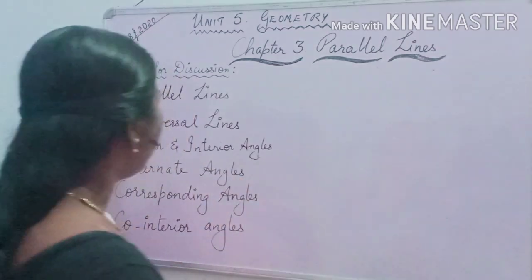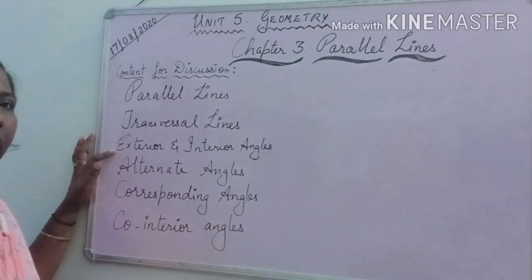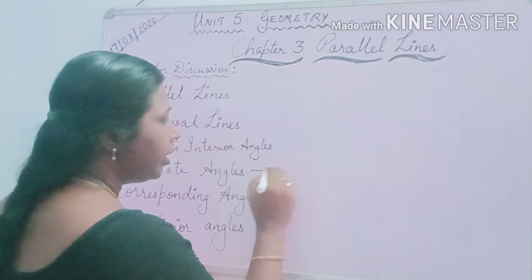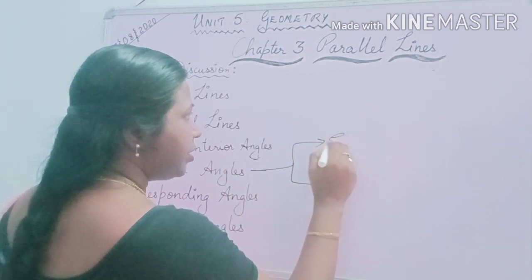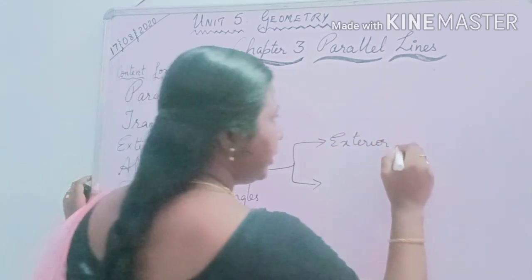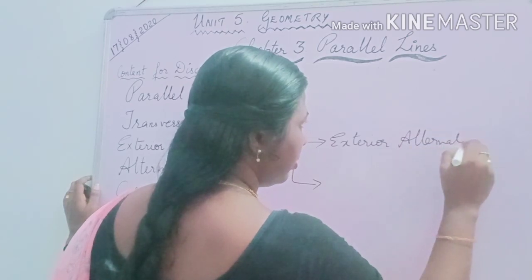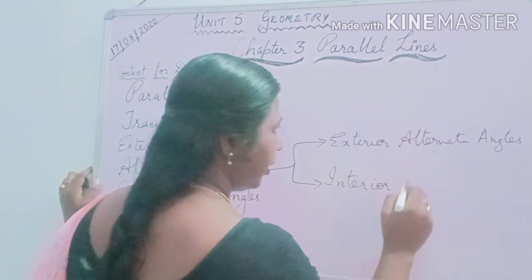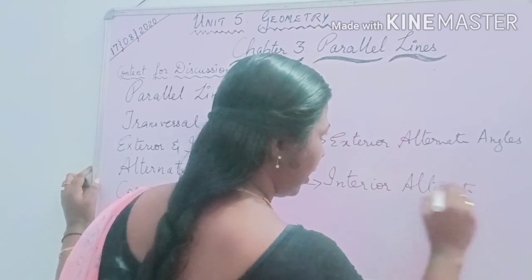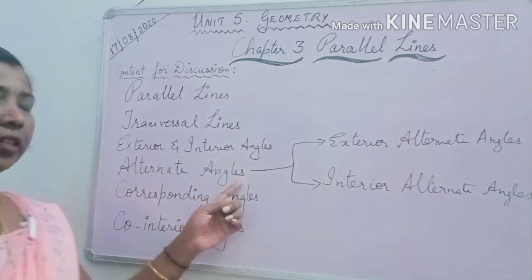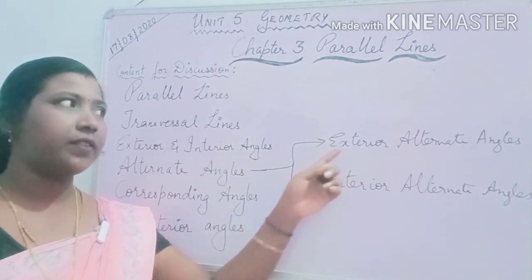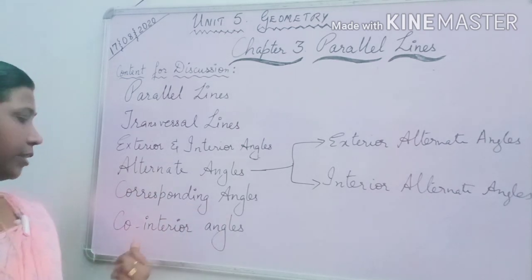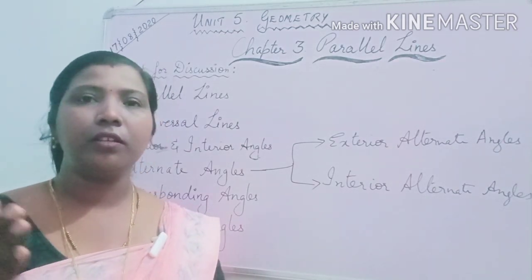In this module we are going to learn about Parallel Lines, Transversal Lines, Exterior and Interior Angles, and Alternate Angles. Inside that we will also learn about exterior alternate angles and interior alternate angles. The next points are corresponding angles and co-interior angles. We will also start with a short video to help you understand some topics very clearly.